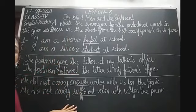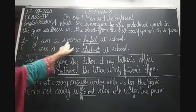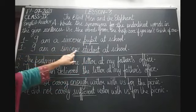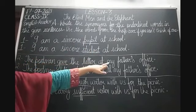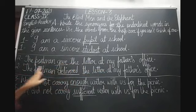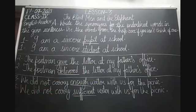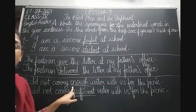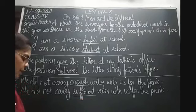Let me revise these three sentences. First: I am a sincere pupil at school — synonym of 'pupil' is 'student' — sentence: I am a sincere student at school. Second: The postman gave the letter at my father's office — synonym of 'gave' is 'delivered' — sentence: The postman delivered the letter at my father's office. Third: We did not carry enough water with us for the picnic — synonym of 'enough' is 'sufficient' — sentence: We did not carry sufficient water with us for the picnic.